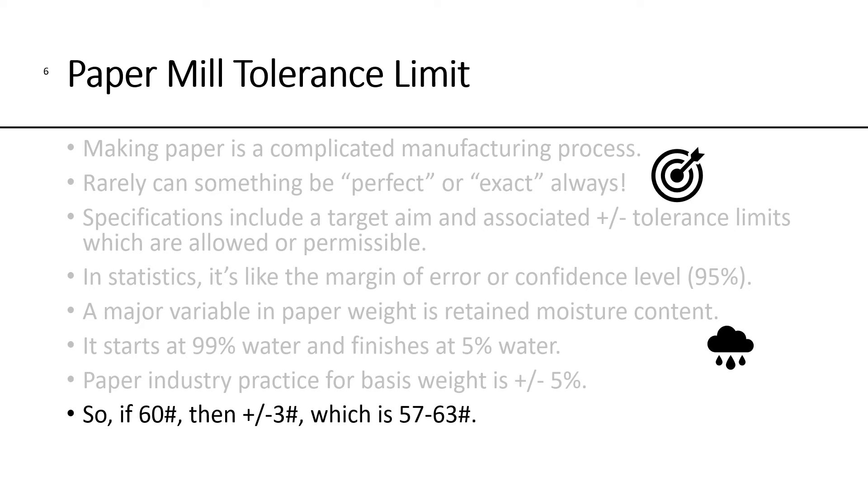The paper industry has a practice of stating that basis weight is within a tolerance of plus or minus 5%. So, if you take a 60-pound paper and take 5% of that, that's 3 pounds. That means that if you're shooting for a target of 60-pound paper, their tolerance limit of 3 pounds allows them to be at a low of 57 and at a high of 63 pounds.